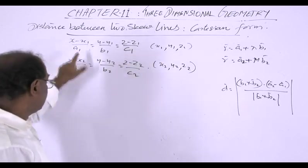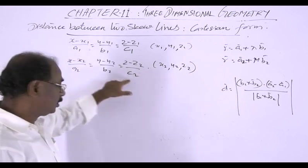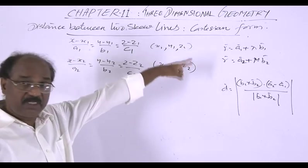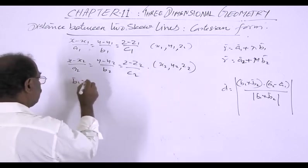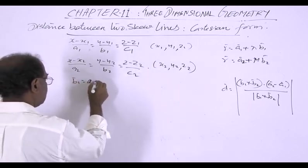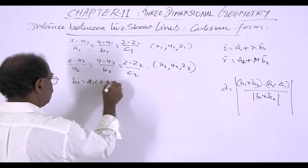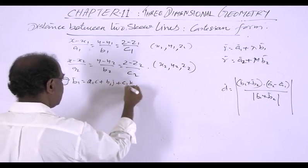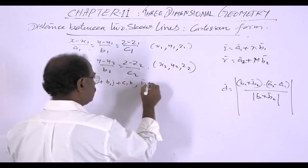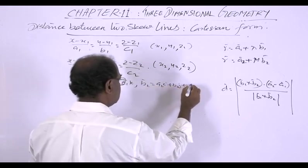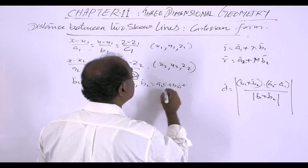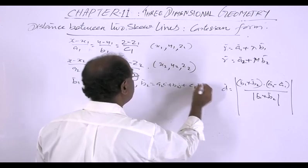And this a1, b1, c1 and a2, b2, c2 are the direction ratios of v1 and v2. And therefore this vector v1 is equal to a1 i plus b1 j plus c1 k and this v2 is equal to a2 i plus b2 j plus c2 k.